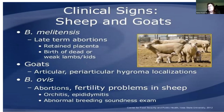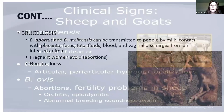Brucella ovis causes reproductive issues in the male and female. In the male it causes inflammation of the testicle and more specifically the epididymis. These males will have abnormal breeding soundness exams, and they can also infect females — when this occurs we can see abortions associated with B. ovis. However, B. ovis is not generally a concern for humans. Just a reminder though that these are zoonotic diseases that can be transmitted to people by consuming milk or coming in contact with placental fluids and fetal discharges. Pregnant women definitely need to avoid this.